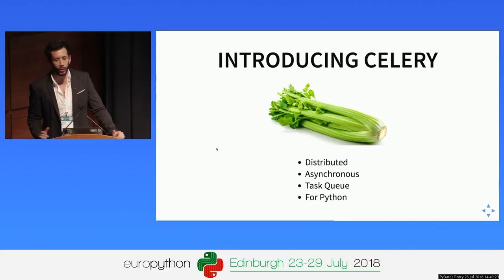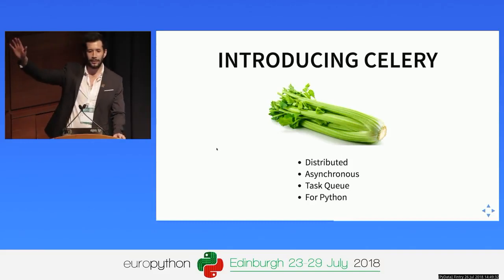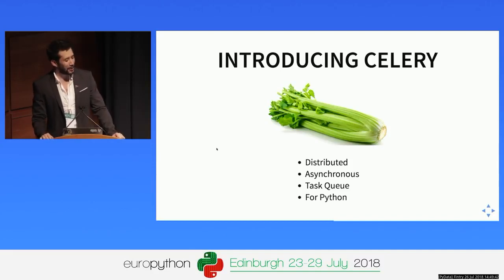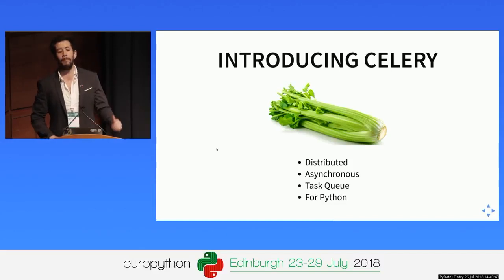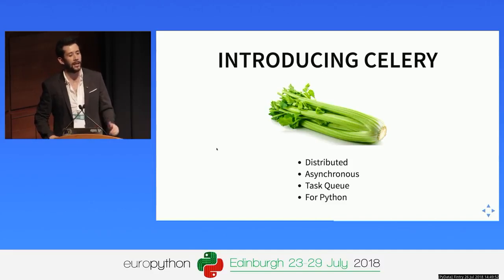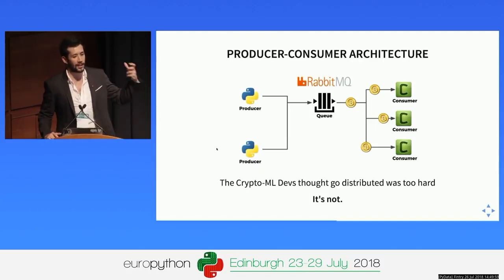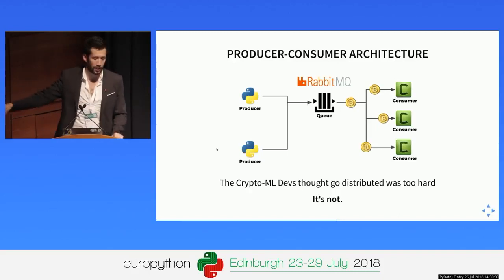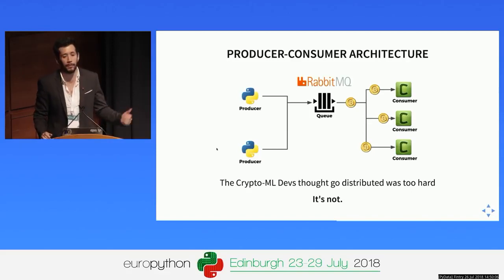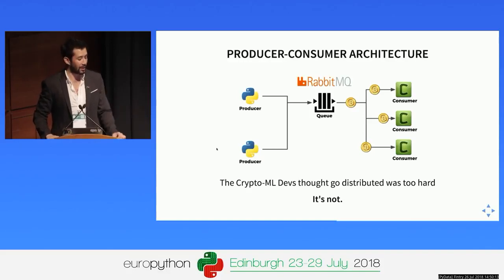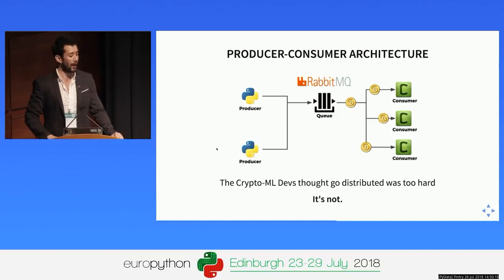And then we introduce Celery. Who here has heard about Celery? Celery is a distributed asynchronous task queue for Python. It's beautifully simple to use and to get started on a non-Celery-ized project. It uses a producer-consumer architecture: producers say 'this task needs to be done,' and workers/consumers continuously listen to a RabbitMQ queue, take the task, and execute it. Many people think it's really hard — the CryptoML devs certainly did — but it's actually not that hard to get started.